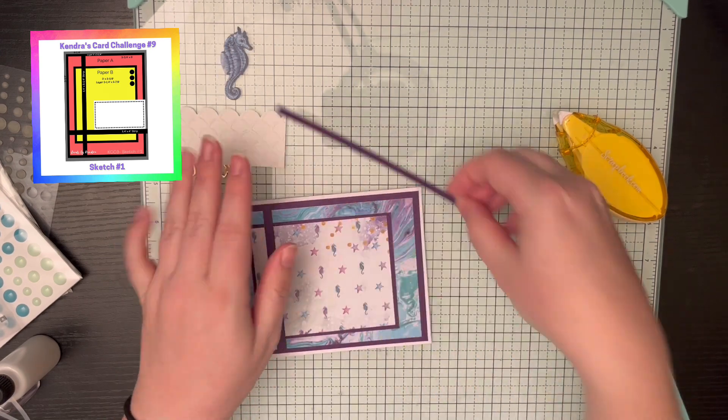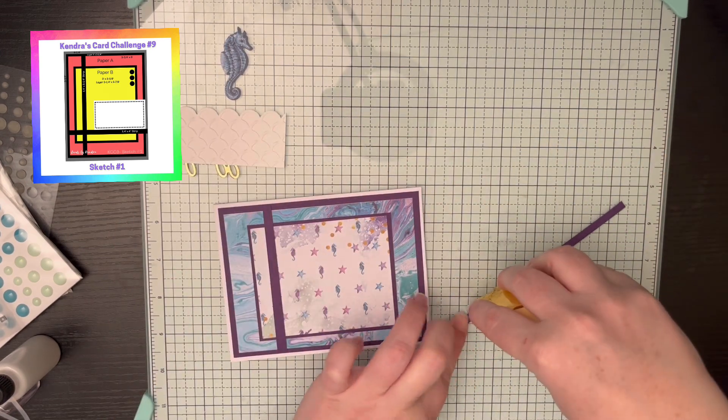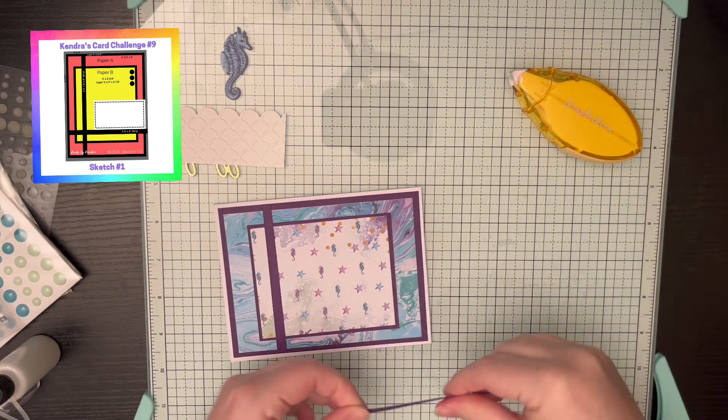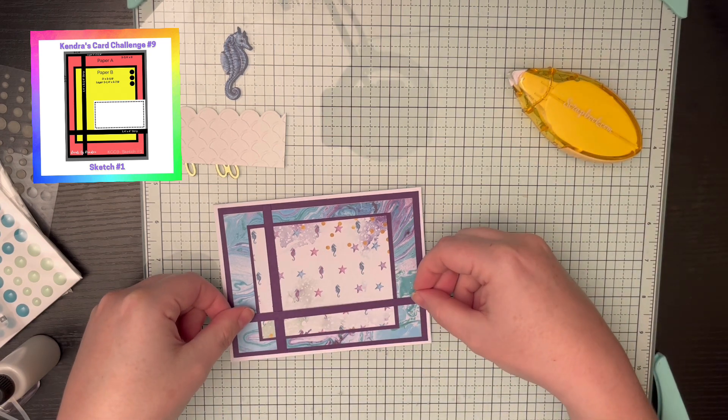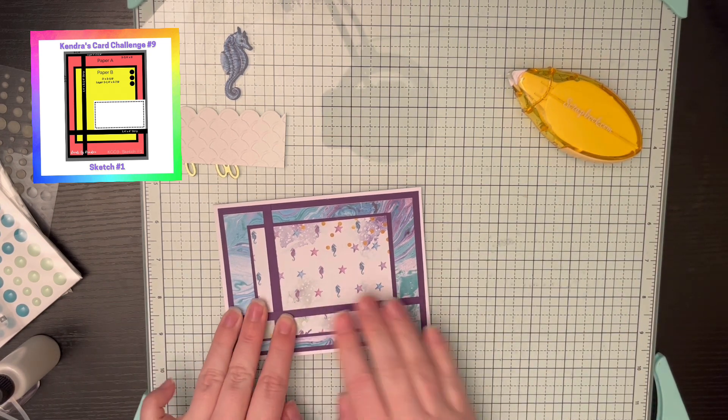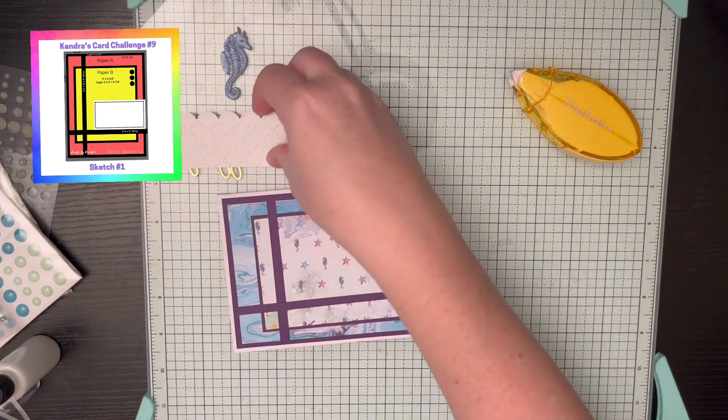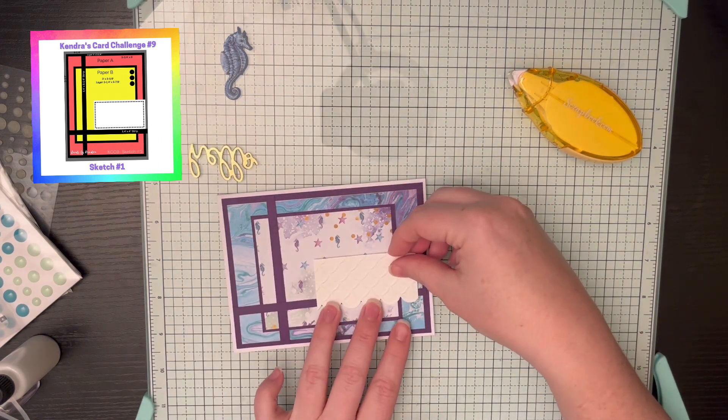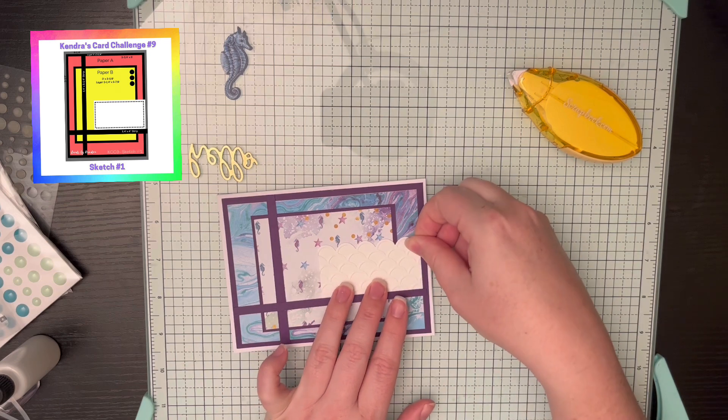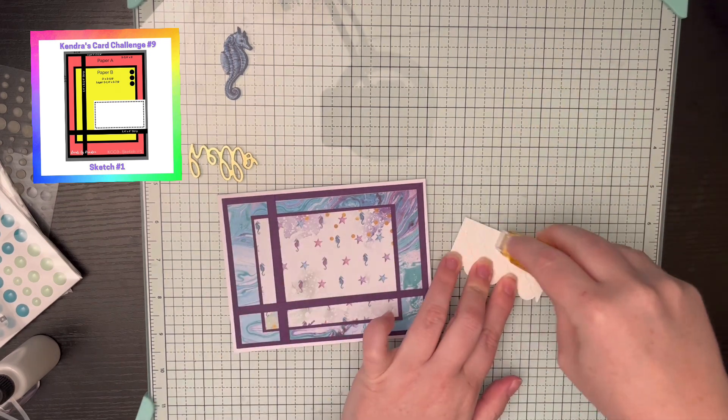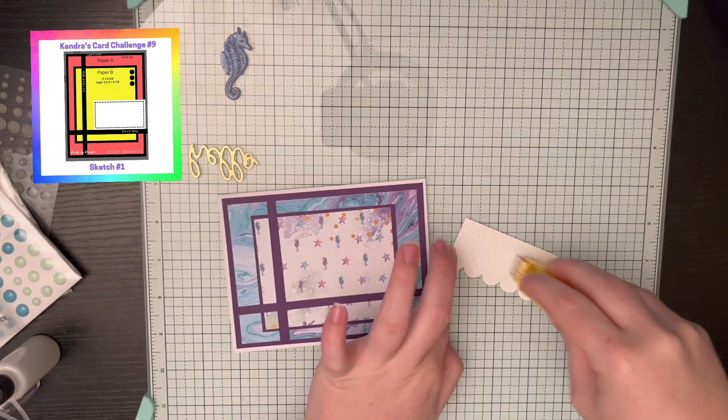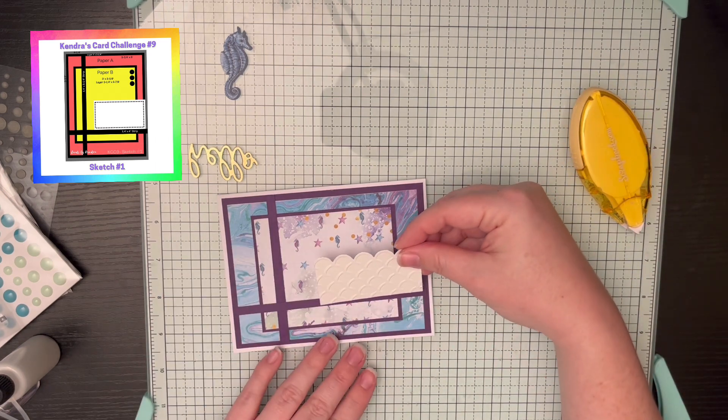I am using Spellbinders Under the Sea card kit that I unboxed as part of their surprise box in an earlier video. I'll try to link that. So if you didn't see that, you can watch that. And then I'm also going to link Kendra's card challenge video, how she ends up cutting the paper, and all that information as well, in case you wanted to do this challenge for yourself.